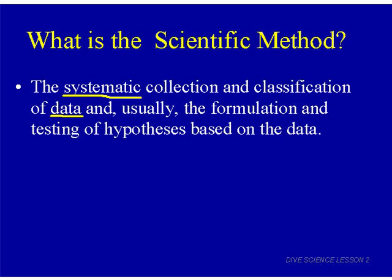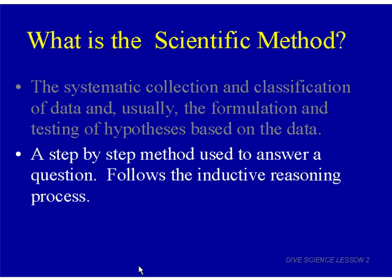Data has to do with the information you record when you do an experiment, whether that's numerical values, quantities, or weather conditions. Data is the information you record during an experiment. The scientific method is a systematic or step-by-step approach in which you collect data, and then formulate and test hypotheses. Another easier way to think about the scientific method: a step-by-step method used to answer a question.